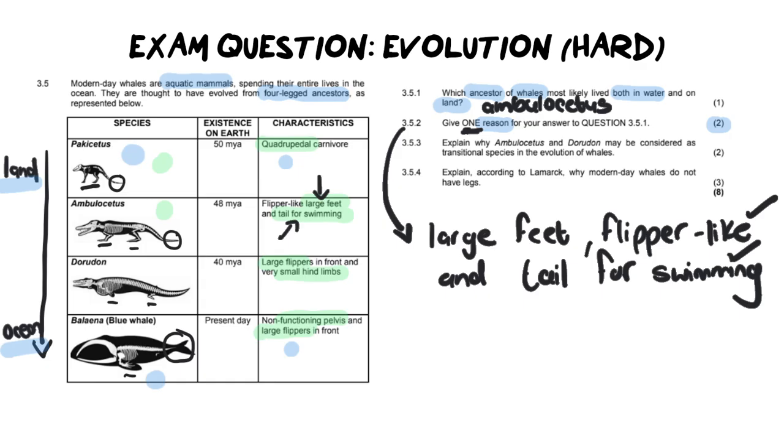Moving on to our next question. It says explain why the Ambulocetus and the Durodon may be considered as transitional species in the evolution of whales. Let's break down the two parts of this answer. First of all, an explain question. Remember for two marks must always have a statement and then a reason. If it was for three, it would be one statement with two reasons. So now we know how to structure our answer. What are we going to say? Why are these two in-between species, the Ambulocetus and the Durodon, why are they seen as transitional species or animals? Now what you need in order to answer this question is your definition of a transitional species from your exam guideline.